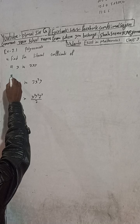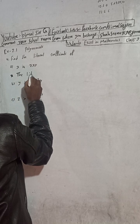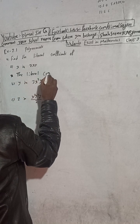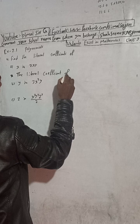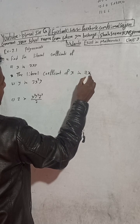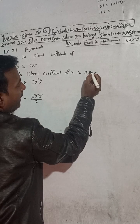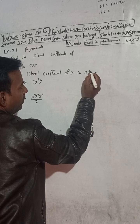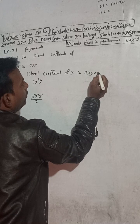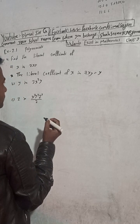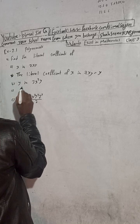So the literal coefficient of x in 7xy — literal coefficient of x means accept this x, exclude it. Seven is the numerical coefficient, and y is the literal coefficient. So we write y as the answer.